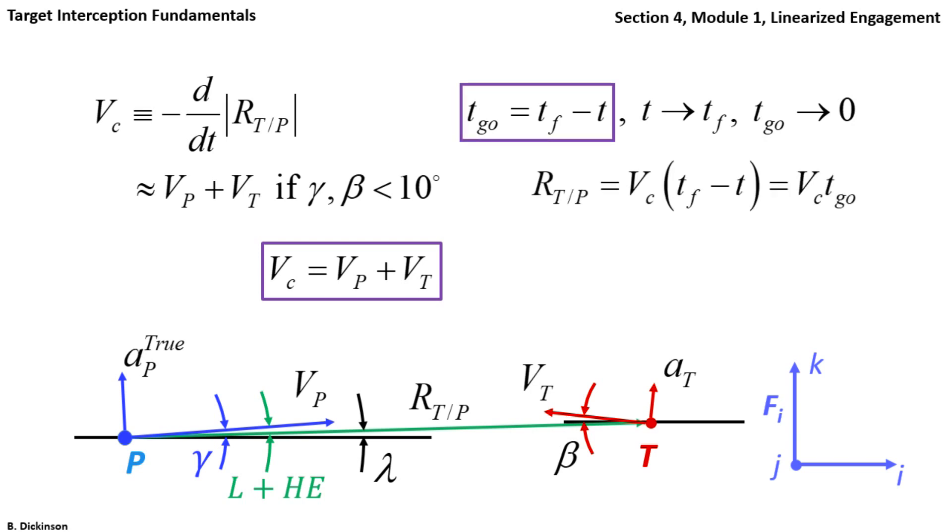The distance between the pursuer and target in the horizontal direction is simply the closing velocity multiplied by time to go. As time to go approaches zero, the horizontal distance between P and T approaches zero.